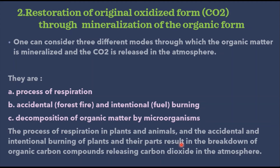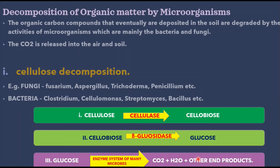Respiration in plants and animals, and accidental or intentional burning of plants and their parts, results in the breakdown of organic compounds releasing carbon dioxide into the atmosphere. The organic compounds deposited in the soil are degraded by the activities of microorganisms — mainly bacteria and fungi — releasing carbon dioxide into the air as well as into the soil.